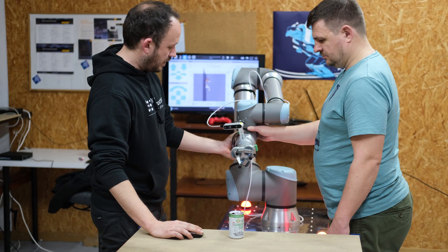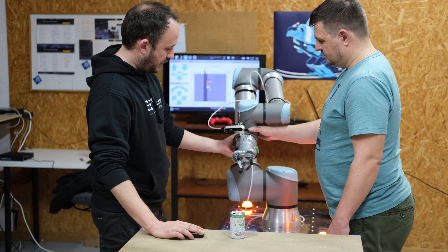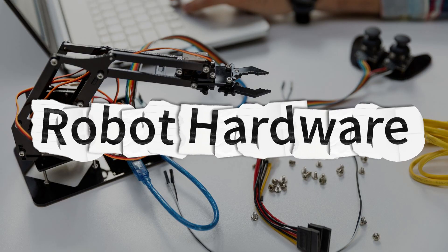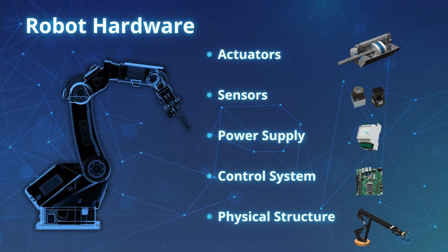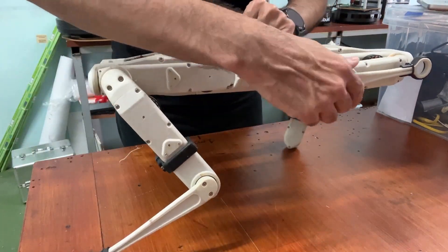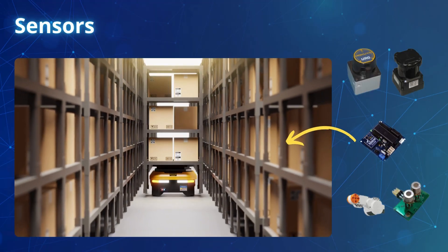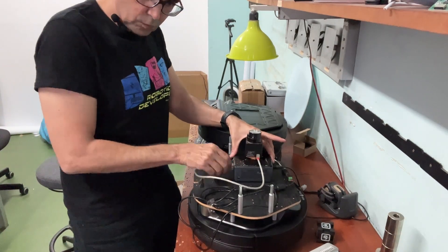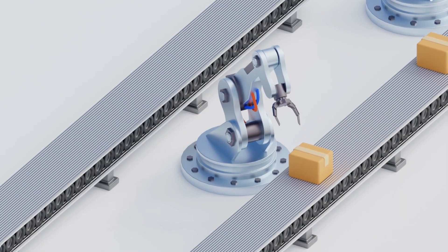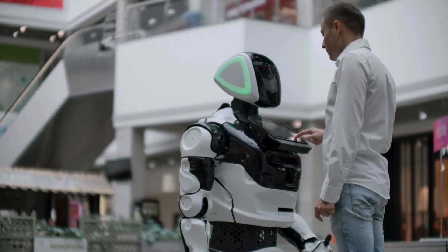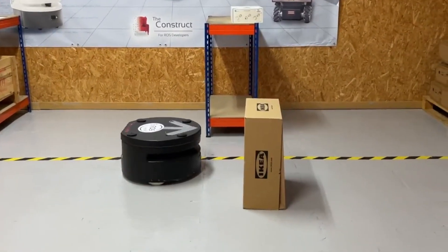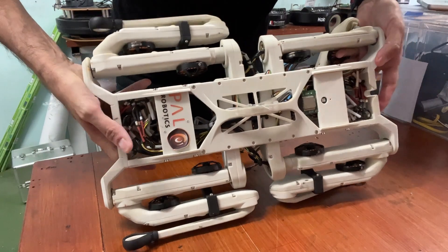We are going to learn about robot hardware. Robot hardware includes the body part of the robot — for instance, robot sensors. Sensors are what allows the robot to perceive the world, for example to detect the face of a person or detect that there is an obstacle in its path.